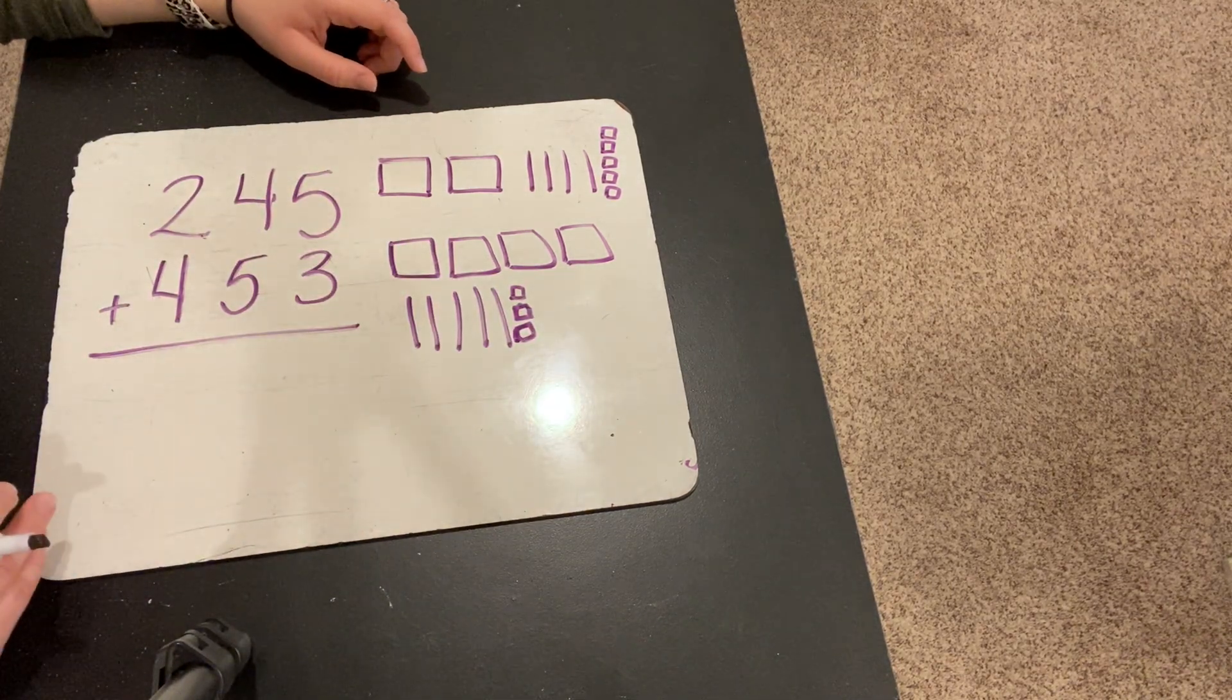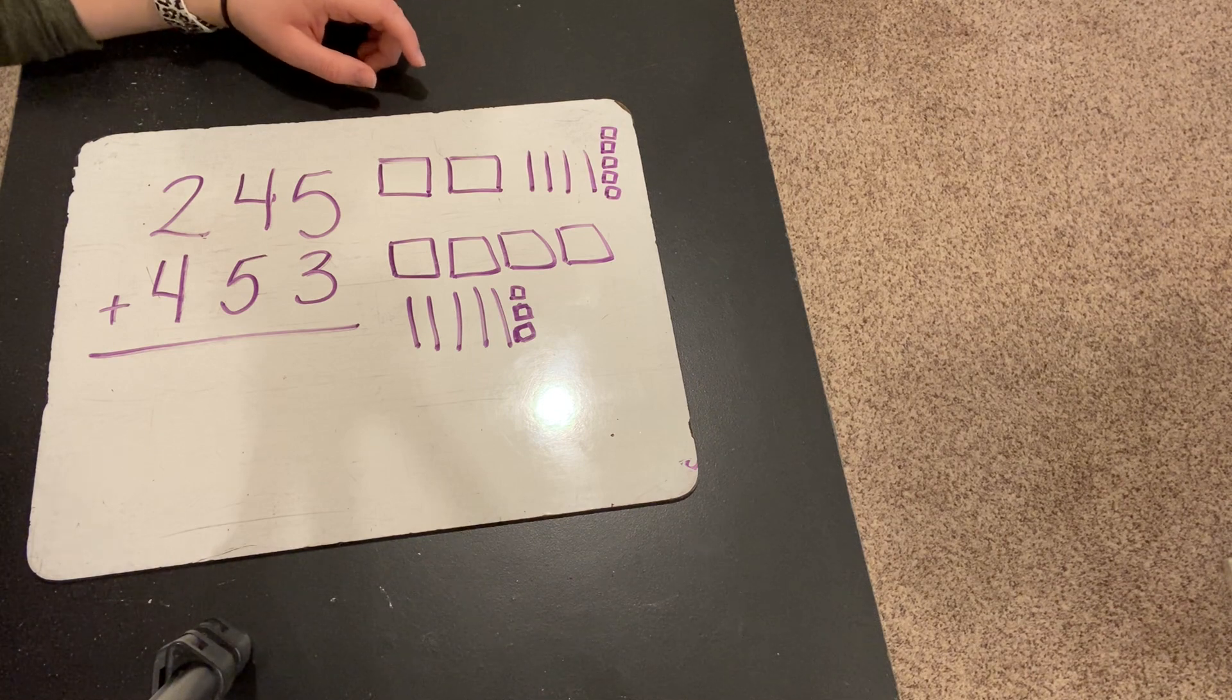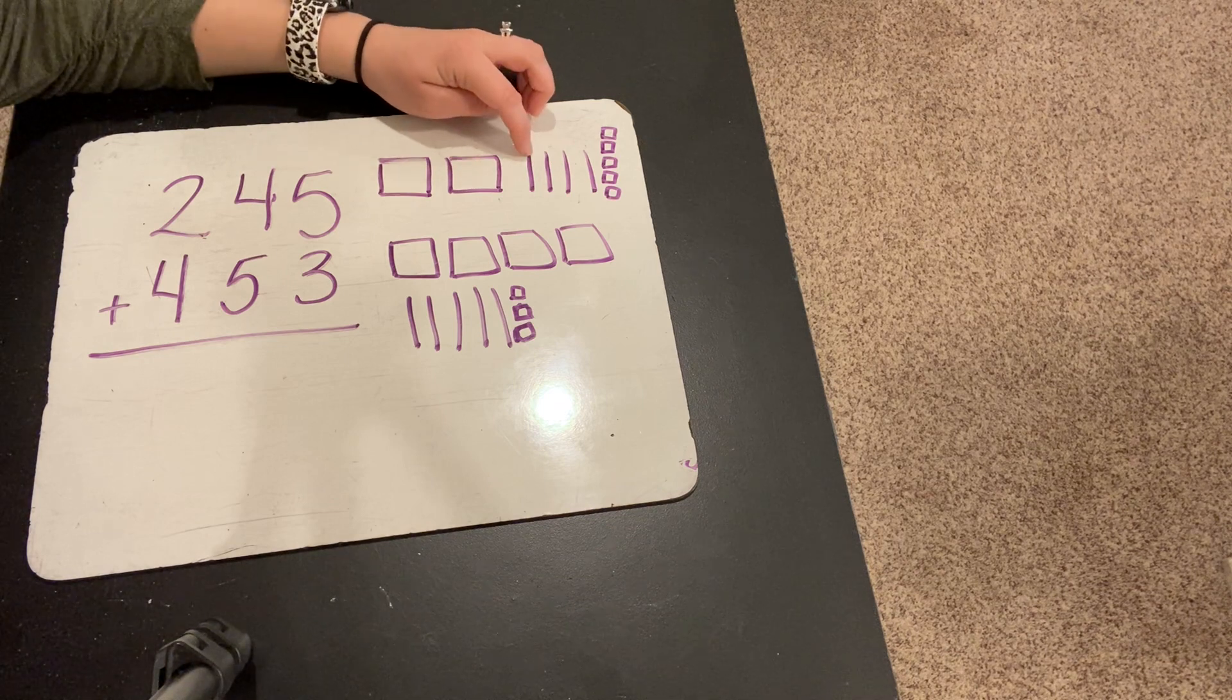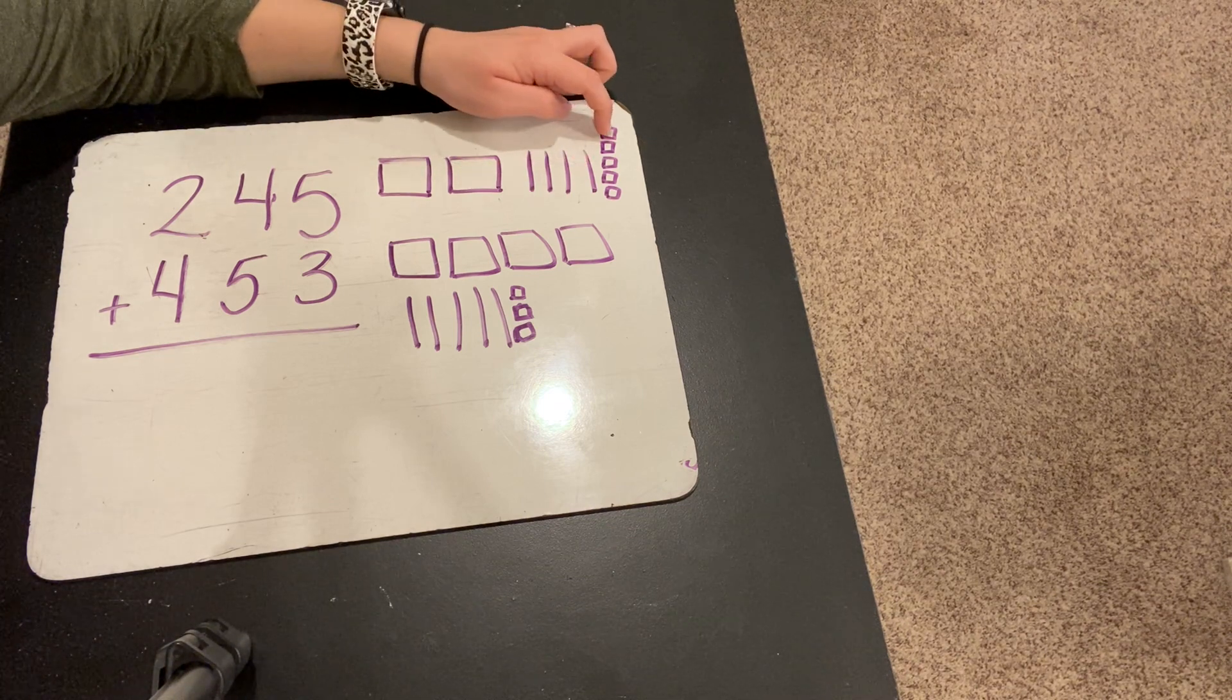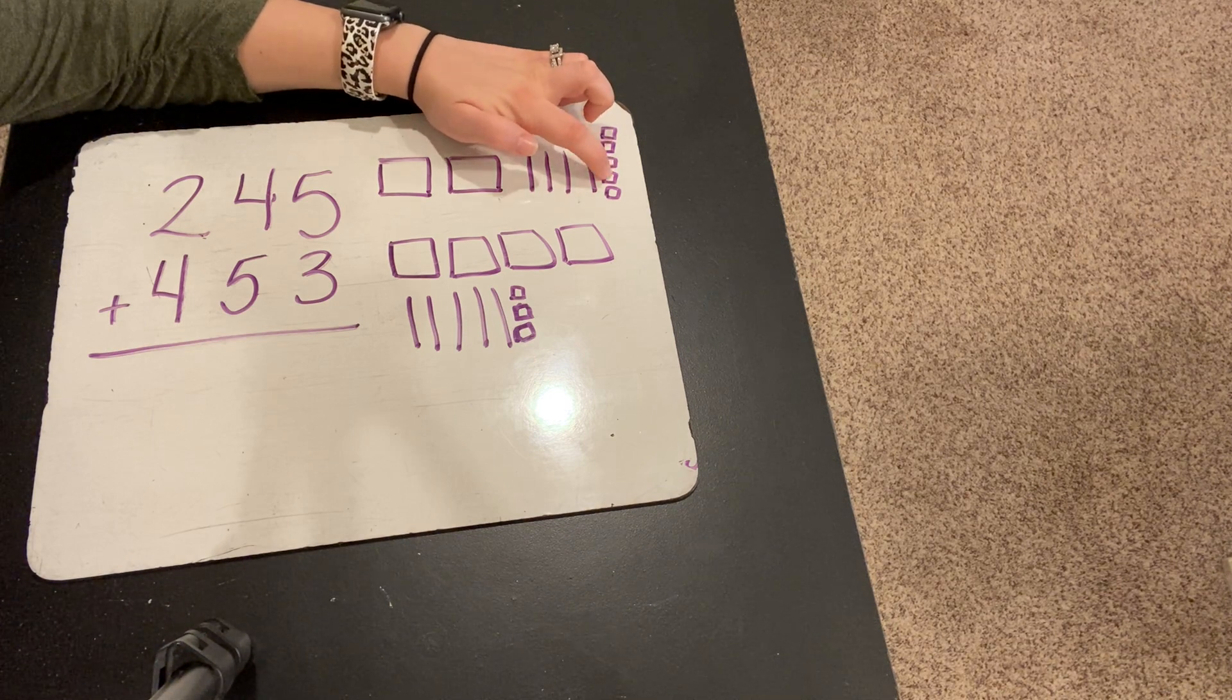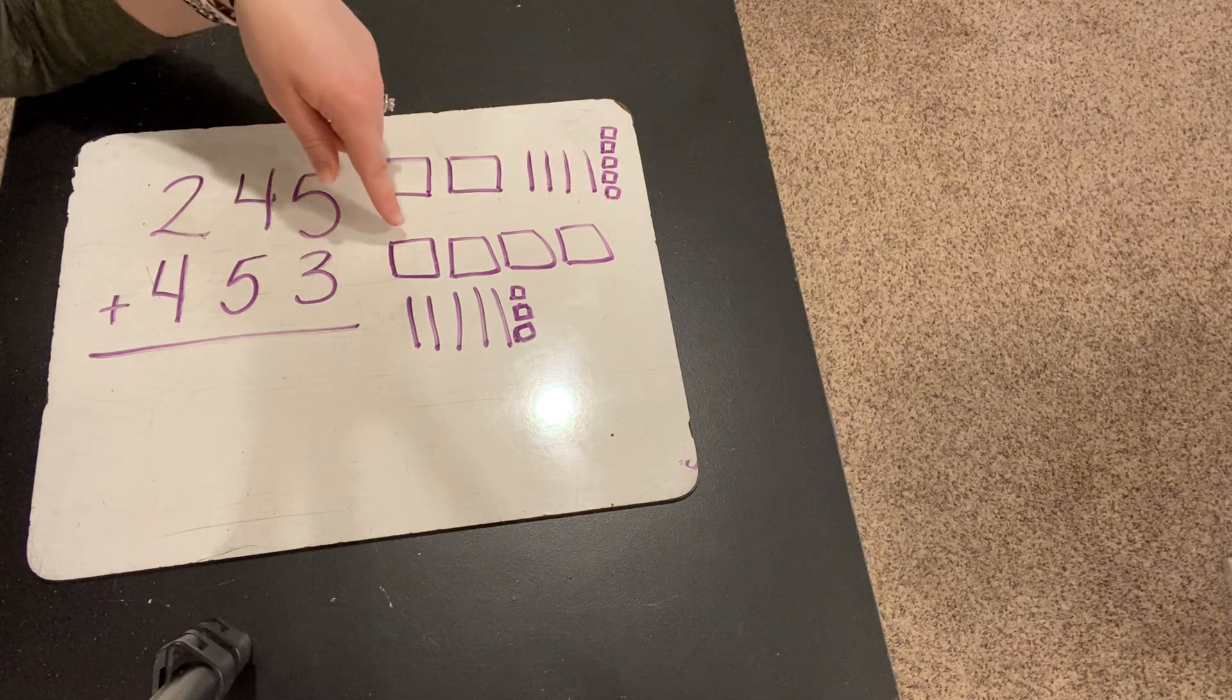Goodness. Okay, before we add them together, we're going to count and make sure that we modeled each one of them correctly first. 100, 200, 210, 220, 230, 240, 241, 242, 243, 244, 245. So, that one is correct.